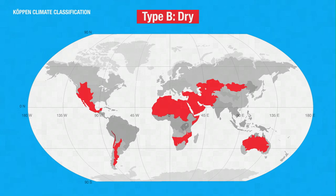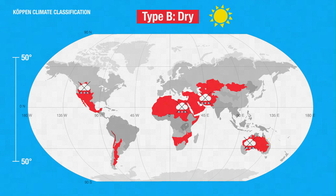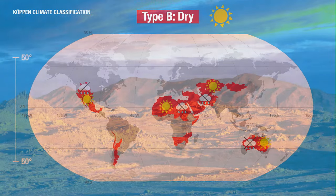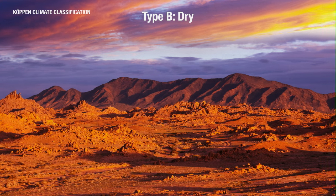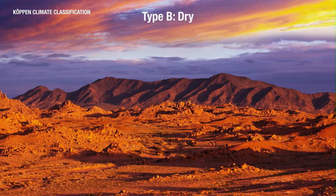Type B climates are dry. Dry climates are found mostly between latitudes 50 degrees north and 50 degrees south. This area is usually hot and sunny, so water evaporates but rarely falls again as rain. The Gobi Desert of Mongolia is an example of a place with type B climate.